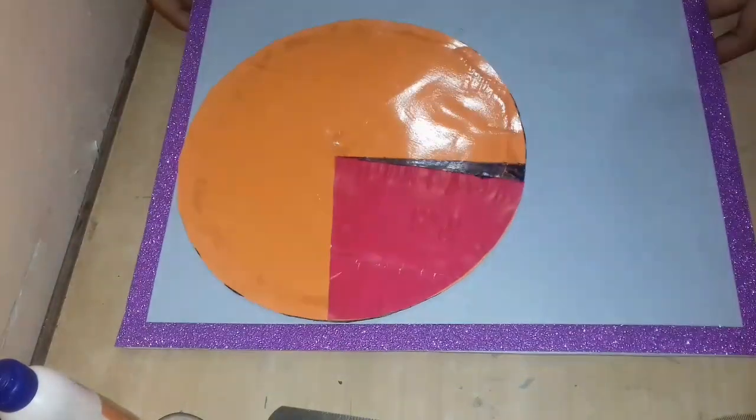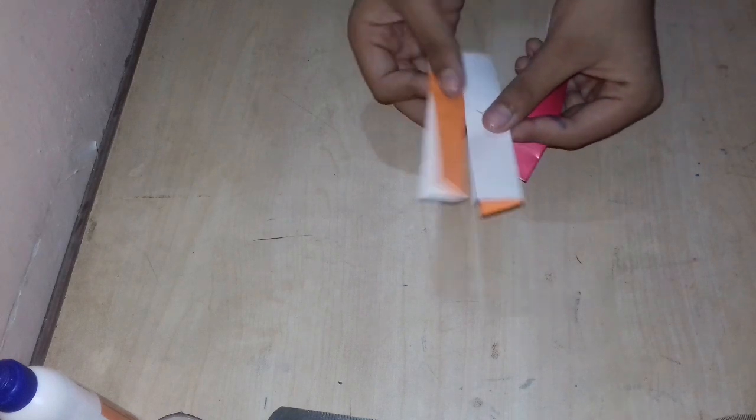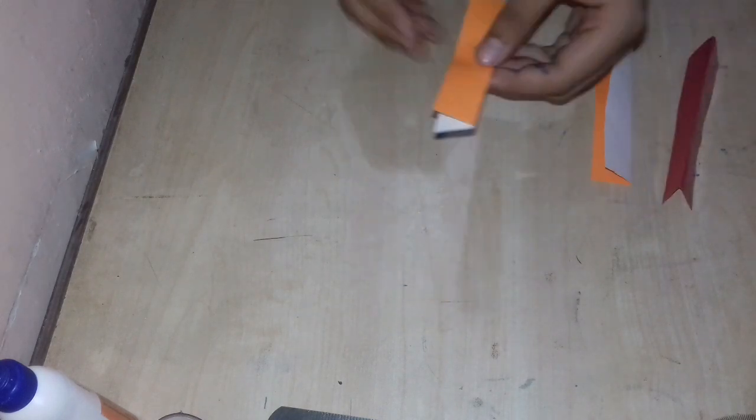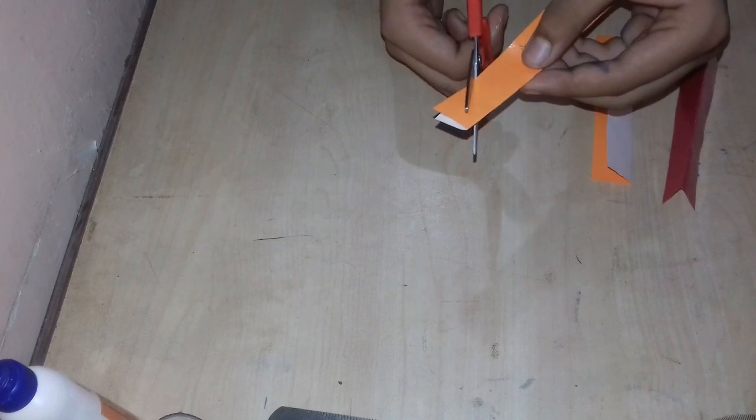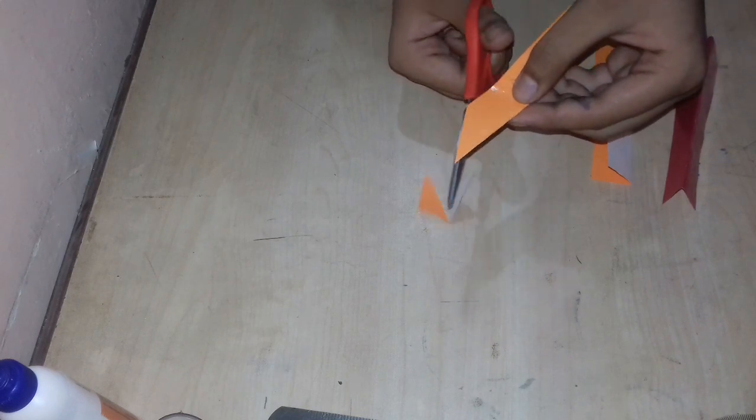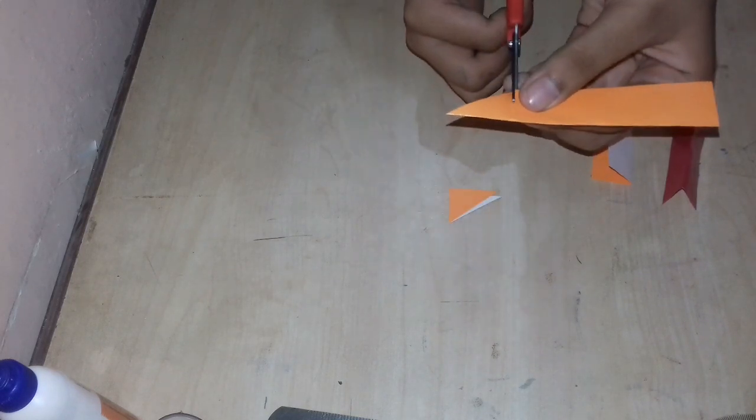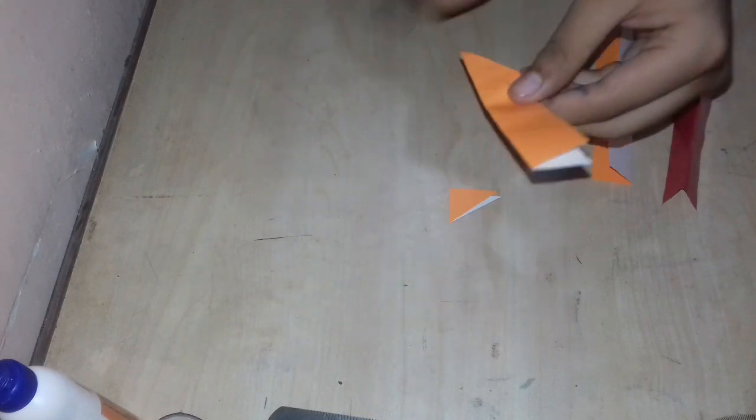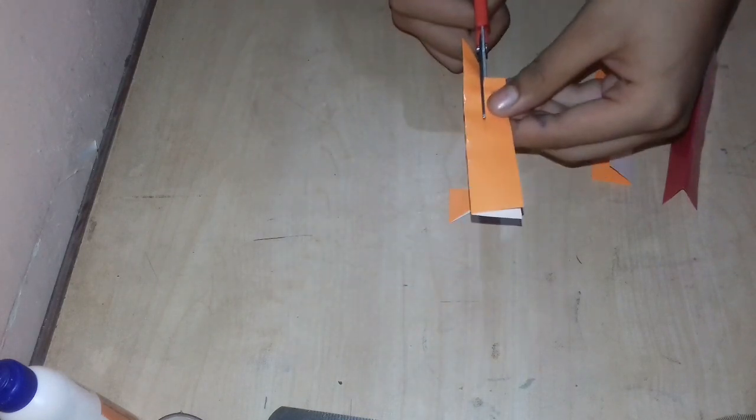Now put it aside and take three strips of paper of different colors and cut arrows from all of them to label the different gases present in air.